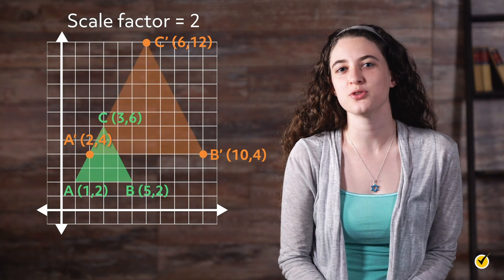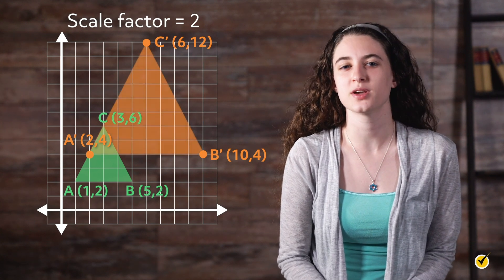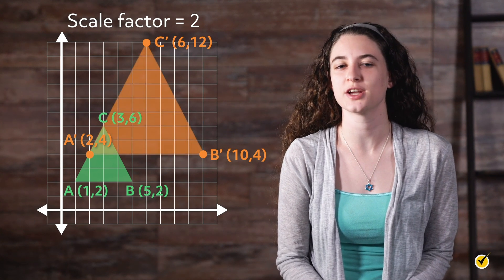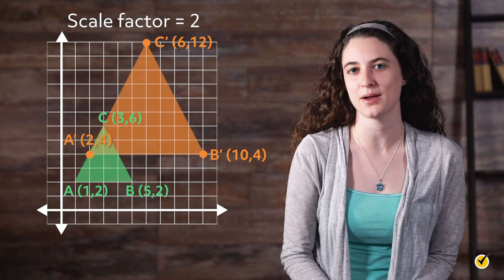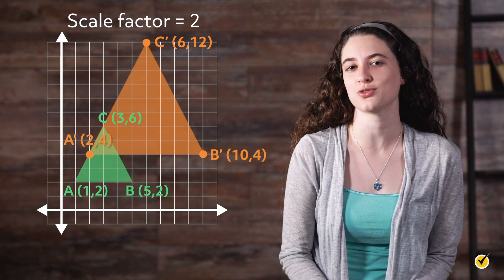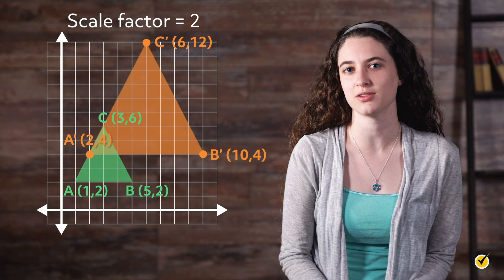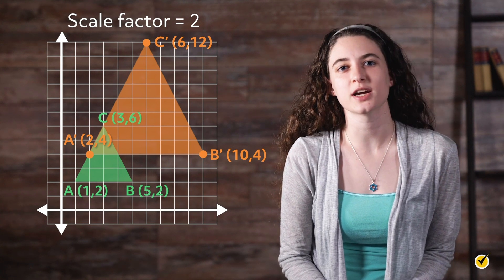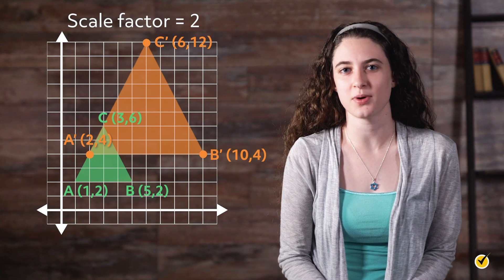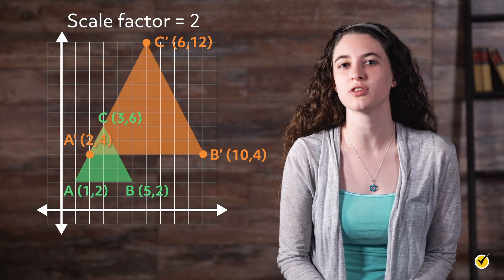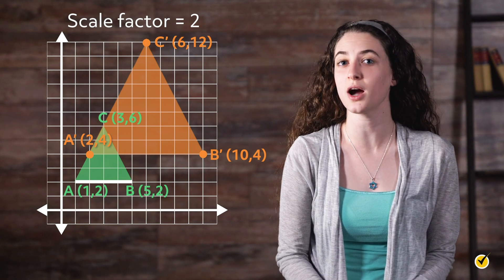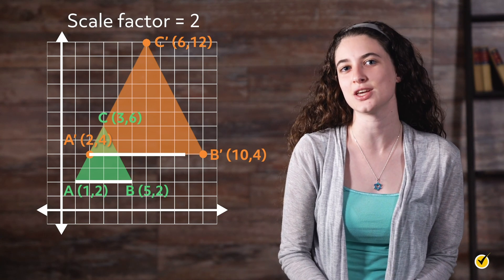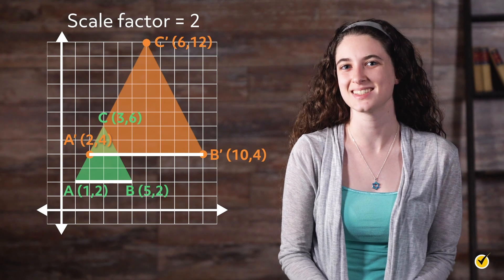Once we have our three new prime points, we can plot them to create triangle A prime, B prime, C prime. It should be twice as big as our original triangle. We can double-check by looking at the lengths of the bottom side — on the original triangle it's 4 units wide, and on the new prime triangle it is 8 units wide. Success!